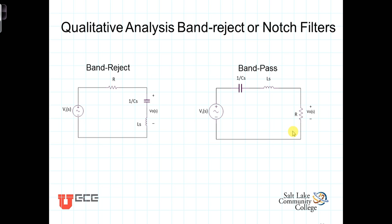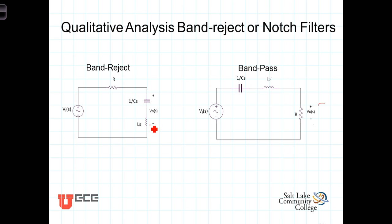The band reject filter is exactly the same circuit, except now we're looking at the output voltage across the series combination of the capacitor and the inductor. So it stands to reason that if the passband filter passes certain frequencies across the resistor and attenuates the rest, then looking across the series LC combination gives us the signal we didn't see there. The passband filter and the band reject filter are complementary structures — this one gives you what the other one didn't.